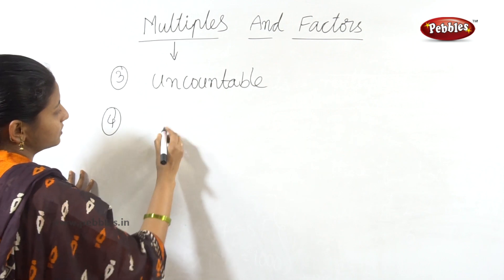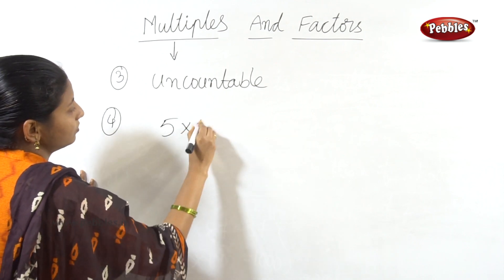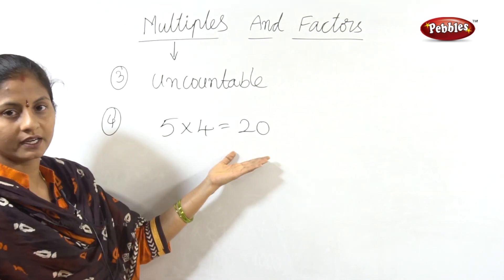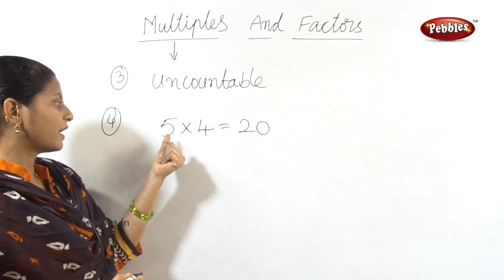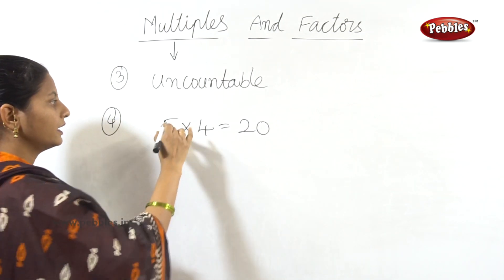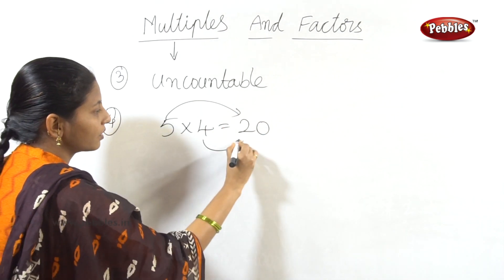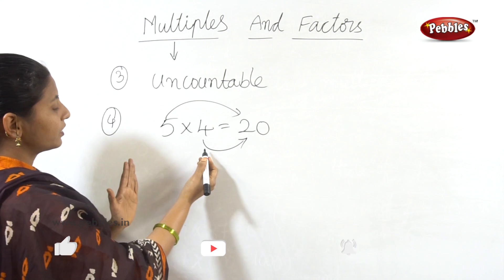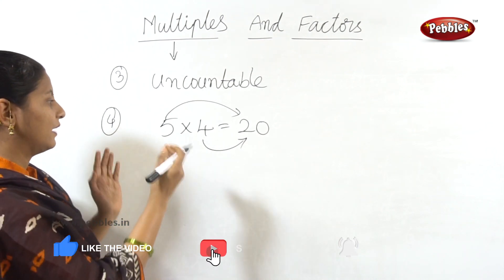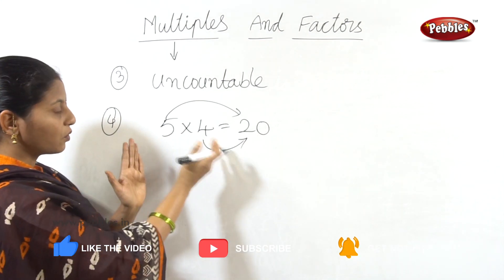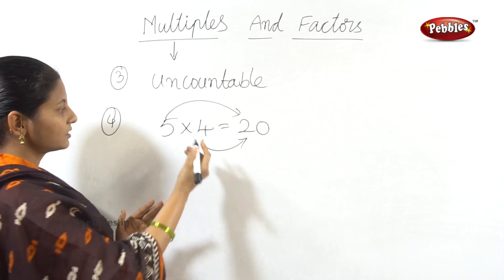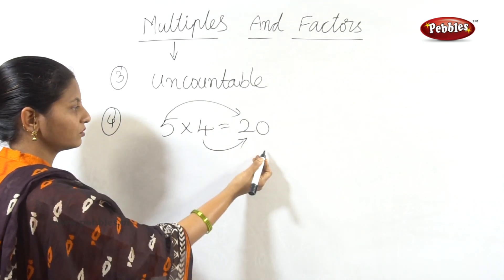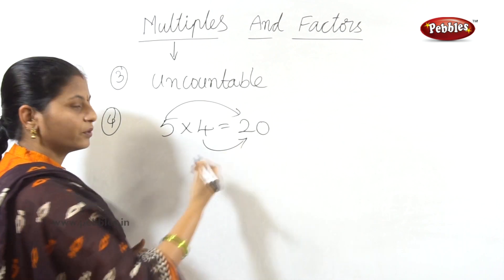Next example: 5 into 4 is equal to 20. So 20 is a multiple of 5 and, at the same time, 20 is also a multiple of 4.